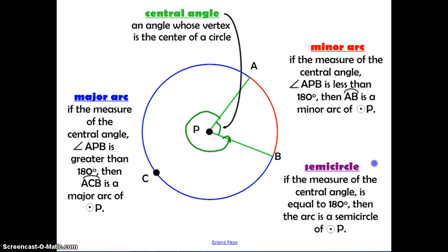The last term is a semicircle. And a semicircle is an arc that covers half of the circle. So if the central angle is equal to 180 degrees, then the arc would be a semicircle.